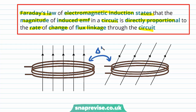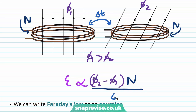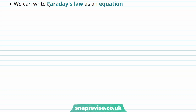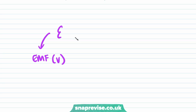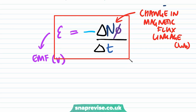Over a certain time delta T, the magnetic flux is going to change from phi1 to phi2, where phi1 is greater than phi2. The number of turns in the coil N remains constant. Therefore, we can write that the EMF, which we represent with epsilon, is proportional to phi2 minus phi1 times the number of turns N divided by delta T. We can now write Faraday's law as an equation: the EMF, measured in volts, is equal to minus the change in magnetic flux linkage, which is the change in N times phi, measured in Webers, divided by the change in time. It's important to remember the minus sign here, and we're going to discuss the origin of this minus sign later.